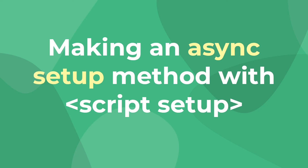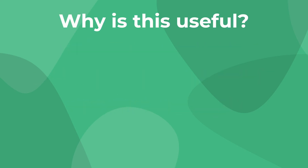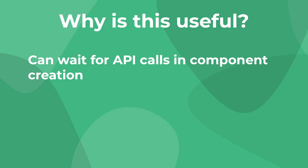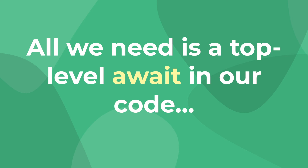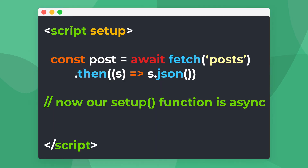Another cool feature of script setup is how easy it is to create an async setup method. This is useful for loading in APIs as your component is created, and even tying in your code with the new experimental suspense feature to display fallback content. All we have to do to make our setup function asynchronous is use a top-level await inside of our script setup. For example, if we're using the fetch API, we can just use await like this, and then our setup will be asynchronous.